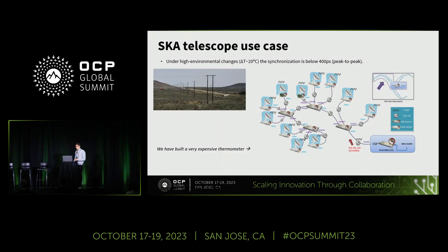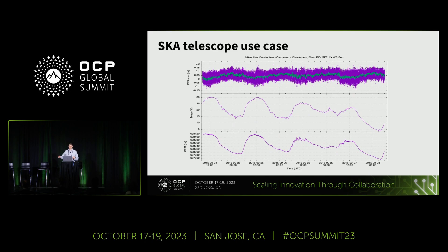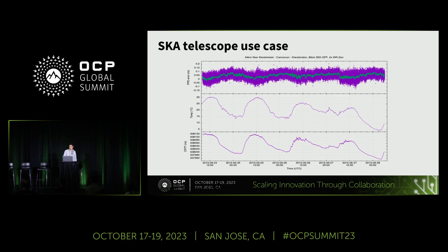An example is our deployment for the Square Kilometre Array radio telescope in South Africa, with optical fibers hanging in the air in the desert. Even with very high temperature excursions, the protocol auto-compensates and maintains accurate time distribution between the different locations — demonstrating that this is not just a lab technology but one that can cope with real environmental conditions in an actual deployed network.